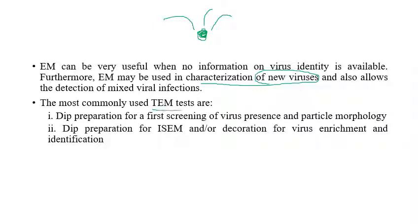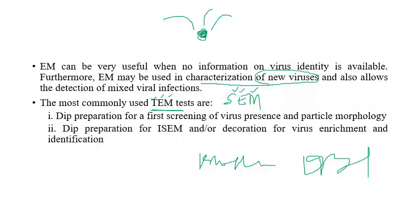In electron microscopy there are different types of electron microscopes available: TEM — transmission electron microscopy — and SEM — scanning electron microscope. These two are the most well-known. The electron microscope was first discovered by Knoll and Ruska, who invented it in 1931. The prototype of a fully developed electron microscope was later invented by Ruska in 1933.